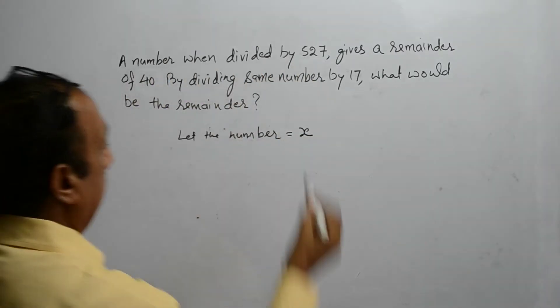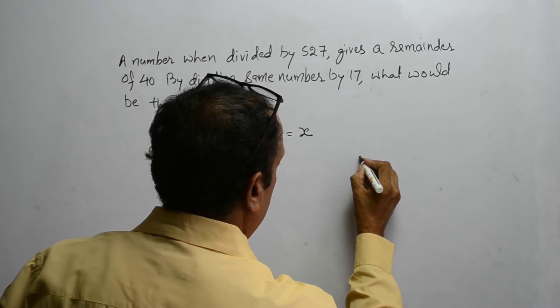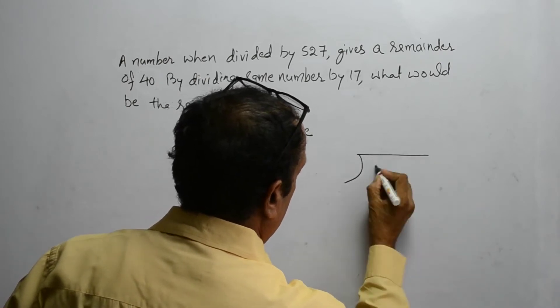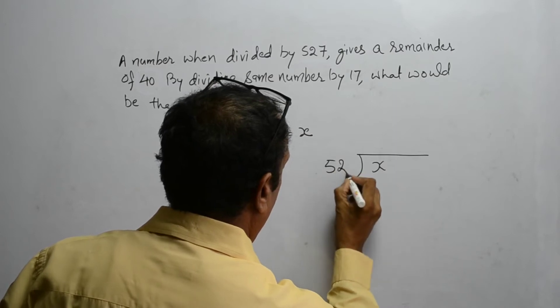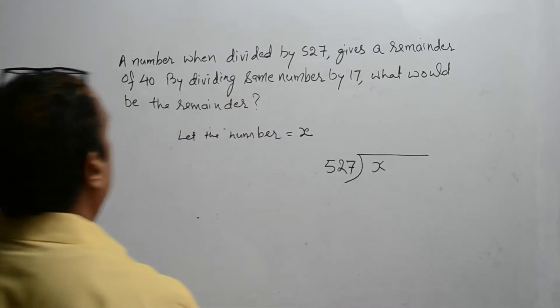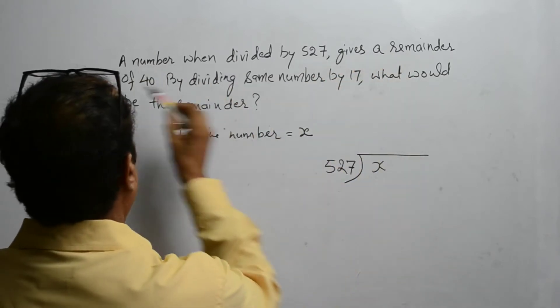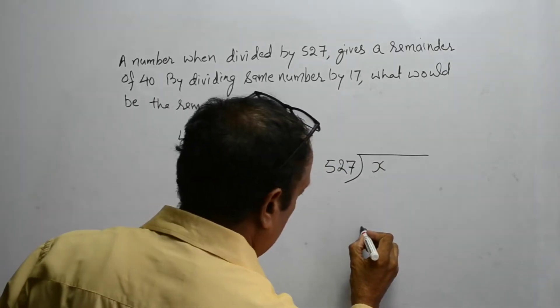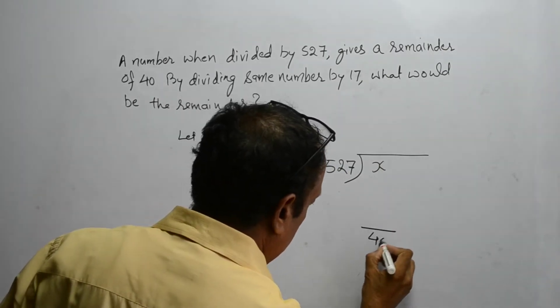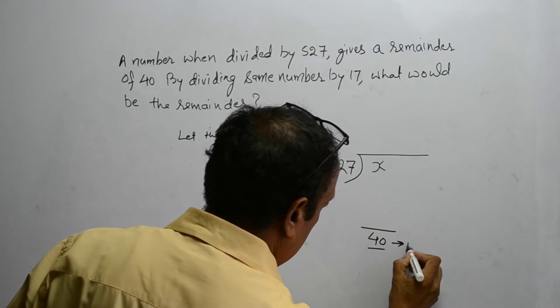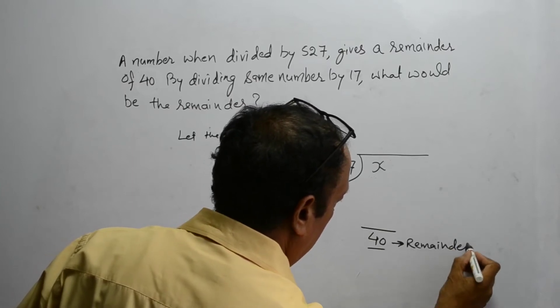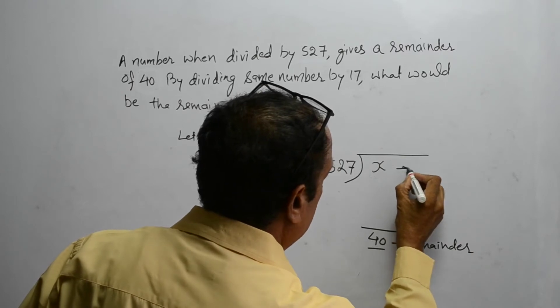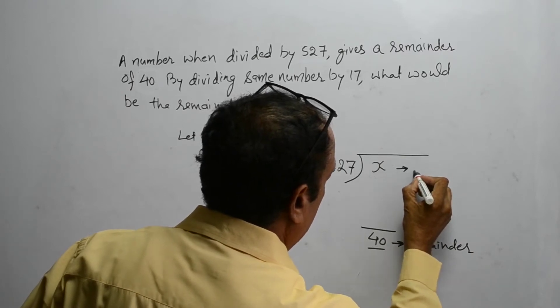A number when divided by 527 gives a remainder of 40. This is the number.